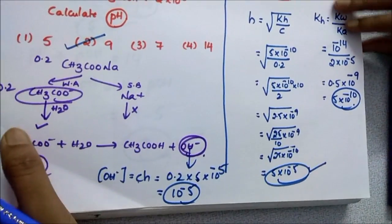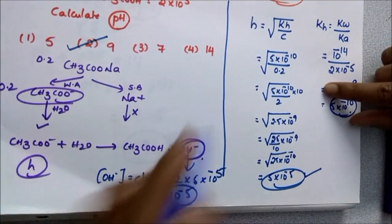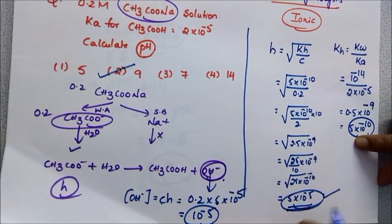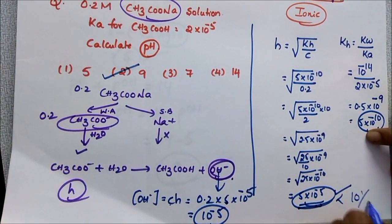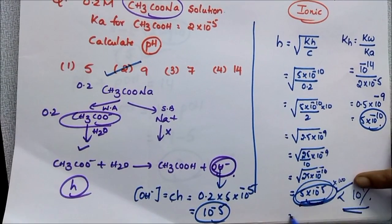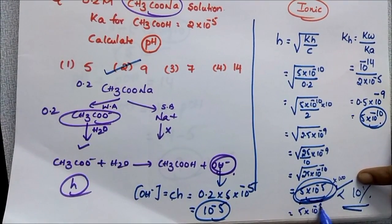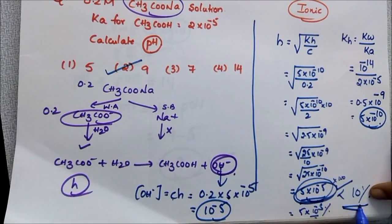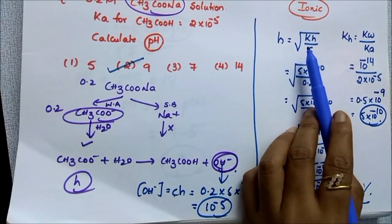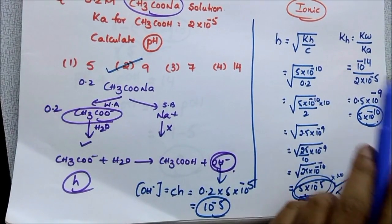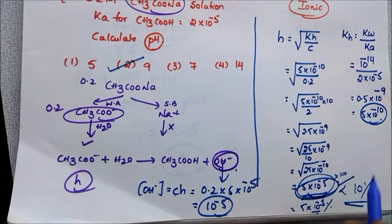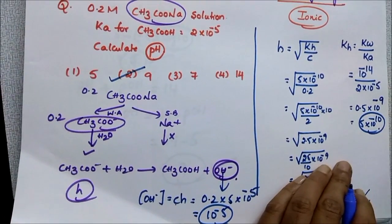And here one more point I discussed at the end of the previous video: H value. If you see here, we got this value less than 10%. How? This H, just multiply with 100, then you get 5 into 10 power of minus 3 percent. This is less than 10%. So whatever H value I neglected in the previous video, that is correct. If this value is greater than 10, you have to solve by using quadratic equation.